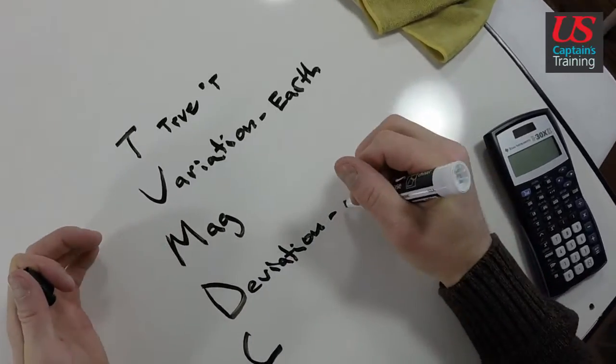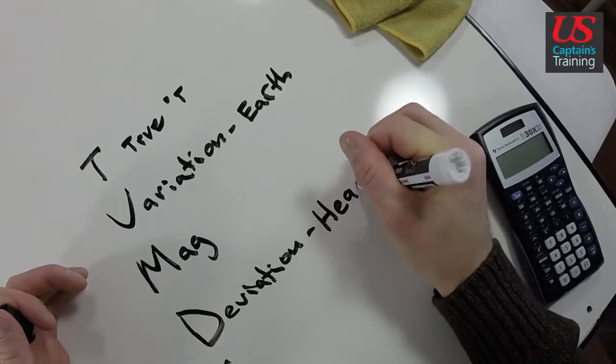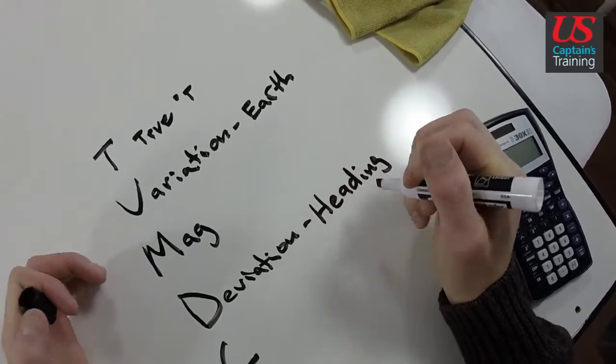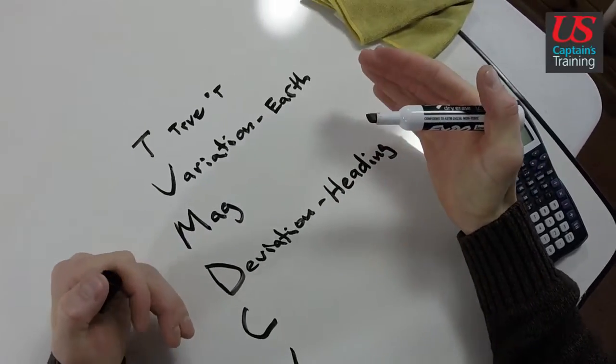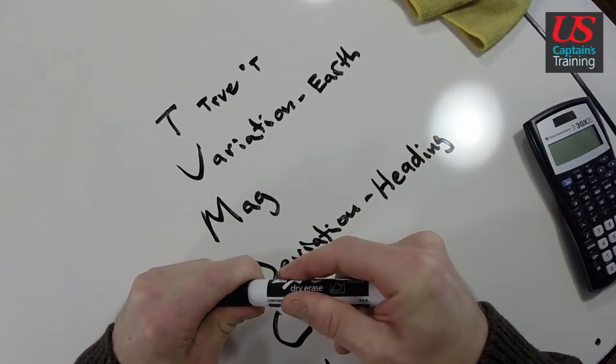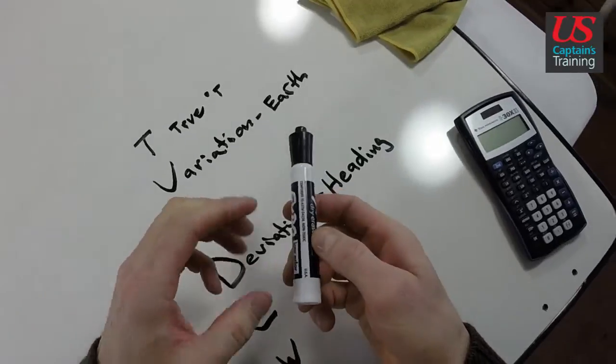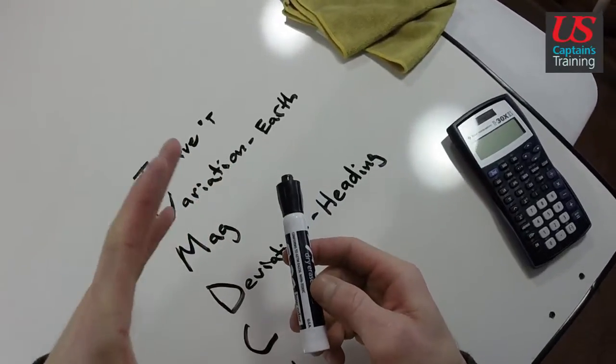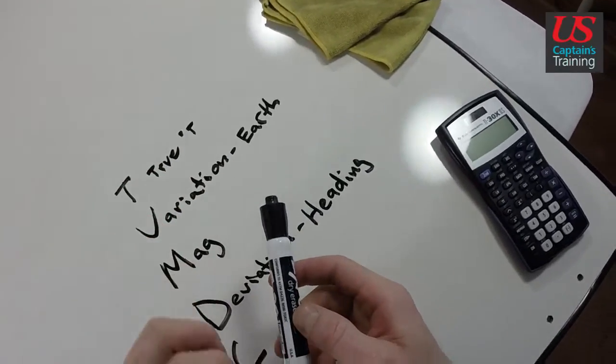The heading of your ship is what makes deviation. You have certain magnetic parts of your ship. Your ship may be steel. It may have batteries. It may have tools.